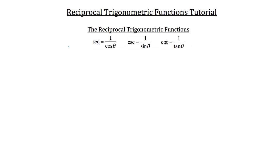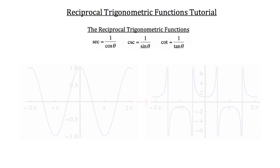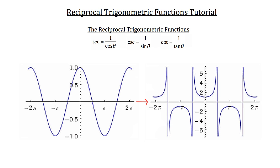Now let's take a look at how the graphs behave for each of these reciprocal trigonometric functions. We'll begin with secant. Secant is derived from 1 over cosine. On the left I've prepared your standard graph of cosine — the parent function, y equals cosine theta. Each cycle occurs over a distance of 2 pi, which is the period.